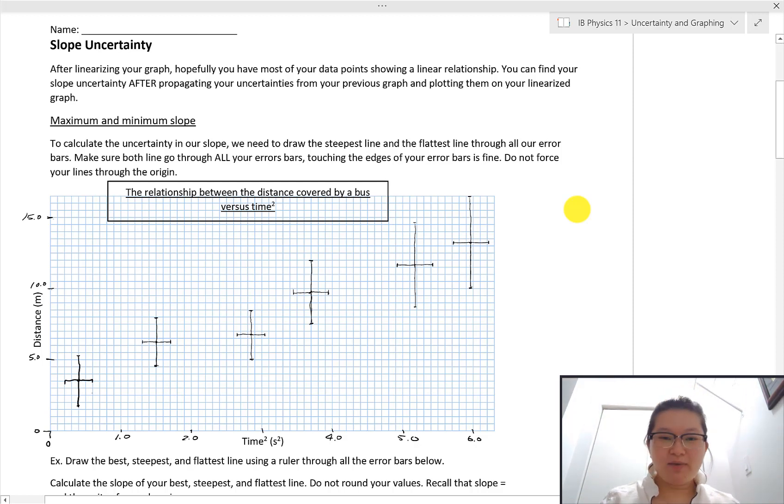And why you might do that is because as you further analyze the slope of your graph and make meaning out of it, you might need this uncertainty in your slope to show some uncertainty in the final answer.